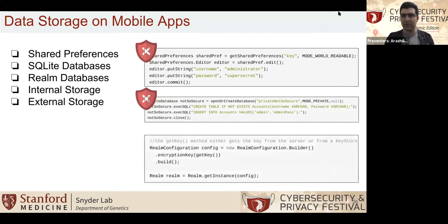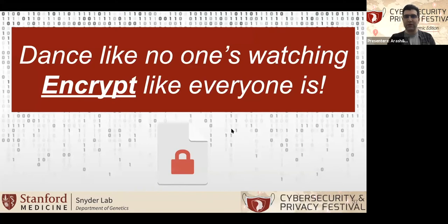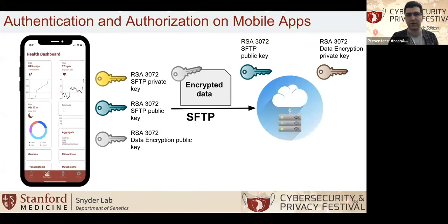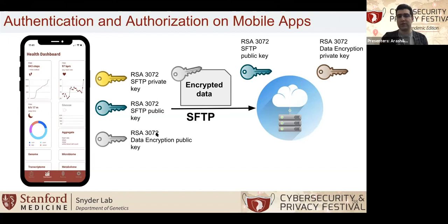Here is an example of how we can use a Realm database to securely store data using a key — we can use KeyStore to store the key on Android or Keychain on iOS. Encryption is the most important thing not only for data at rest but for data in transit as well. Whatever authentication and authorization mechanism you use on your app — for example, myPHD uses SFTP for authentication and authorization and RSA-3072, which is the recommendation from OWASP — you need to make sure that every single piece of data in transit is fully encrypted with respect to your security guideline.